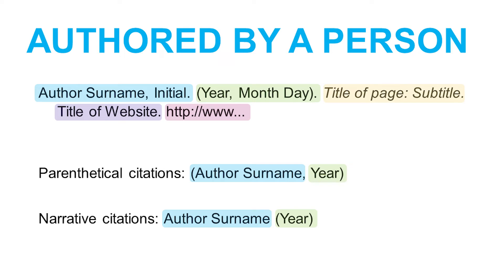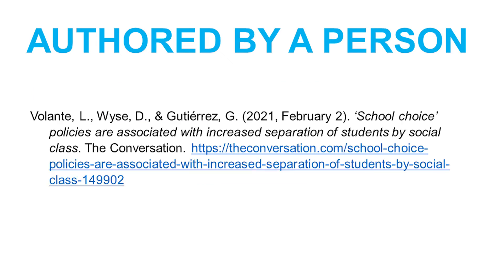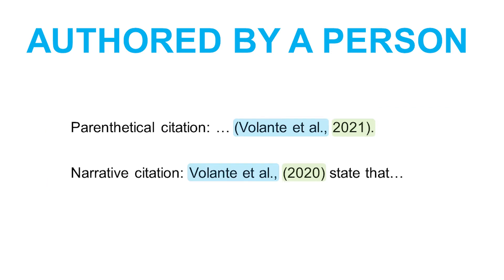Next are the in-text citations. There are two types: parenthetical, which include the author's surname and the year, and narrative citations, where the author's name is incorporated into the text. Here is an example of a web page with a named author. This web page has multiple authors — note the use of the ampersand. Then there is the posting date. The web page title is in italics and in sentence case, with only the first letter capitalised, followed by the name of the website and the access URL. Here are the corresponding in-text citations. The in-text reference requires the author's surname and the year — you do not need to add the month and day. For a resource with three or more authors, you can use the first author's name plus et al.